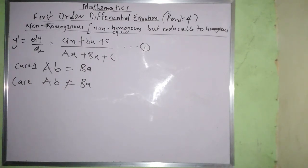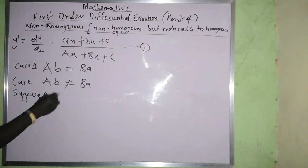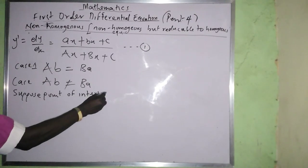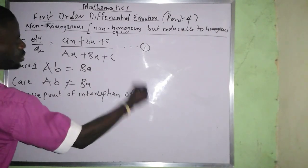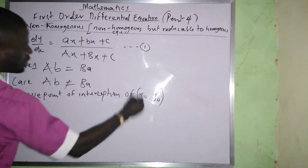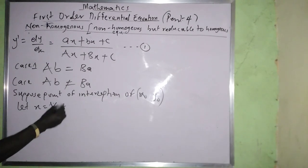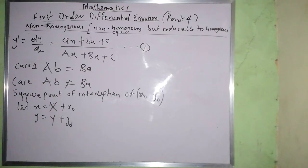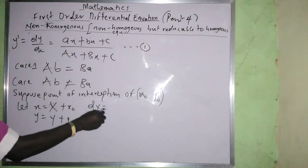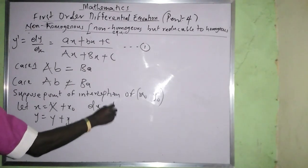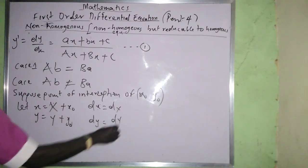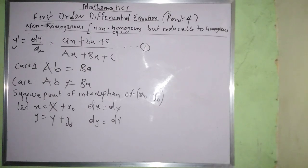For case one, suppose there is a point of intersection (x₀, y₀). We let x equal capital X plus x₀, and y equal capital Y plus y₀. This means dx equals dX and dy equals dY. That is the setup for case one.